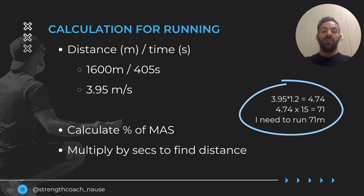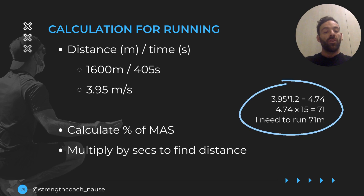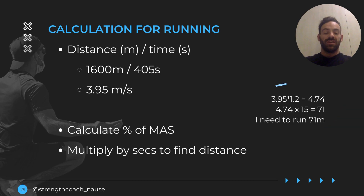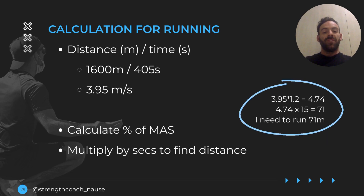For the running calculation, we take distance in meters and divide it by time in seconds. For example, if my mile took 405 seconds, I get a MAS of 3.95 meters per second. That's quite useful because I can then prescribe training: if I want to run at 120%, I multiply 3.95 by 1.2 to get 4.74 m/s. So for a 15-second interval, I multiply 15 by 4.74, meaning I must run 71 meters in 15 seconds to hit the desired speed.